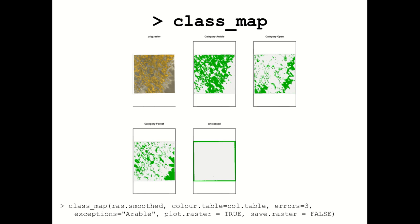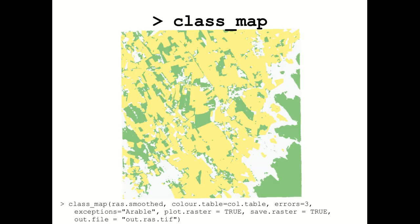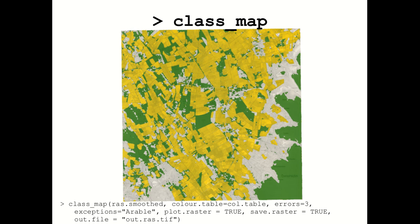Once you think the classification looks good, you save the raster and open it in a desktop GIS program to look more carefully and overlay it onto the original map. In this case it looks pretty good: the yellows match up with the arable land, the darker areas are covered with our green forest category, and the lighter areas are covered with the open land color we've chosen.